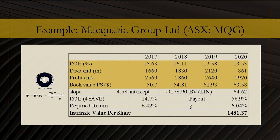The next company is Macquarie Group, ticker MQG. Here, the intrinsic value of MQG is estimated to be $1,481 — that is more than nine times the current share price. While the value of G is not zero and it's not larger than R, there is something else wrong. The issue is that the values of R and G are very close to one another, so the difference R minus G becomes very small, and when you divide by a very small number the result becomes very large. We do not want G and R to be close to one another — that is also something to keep in mind.